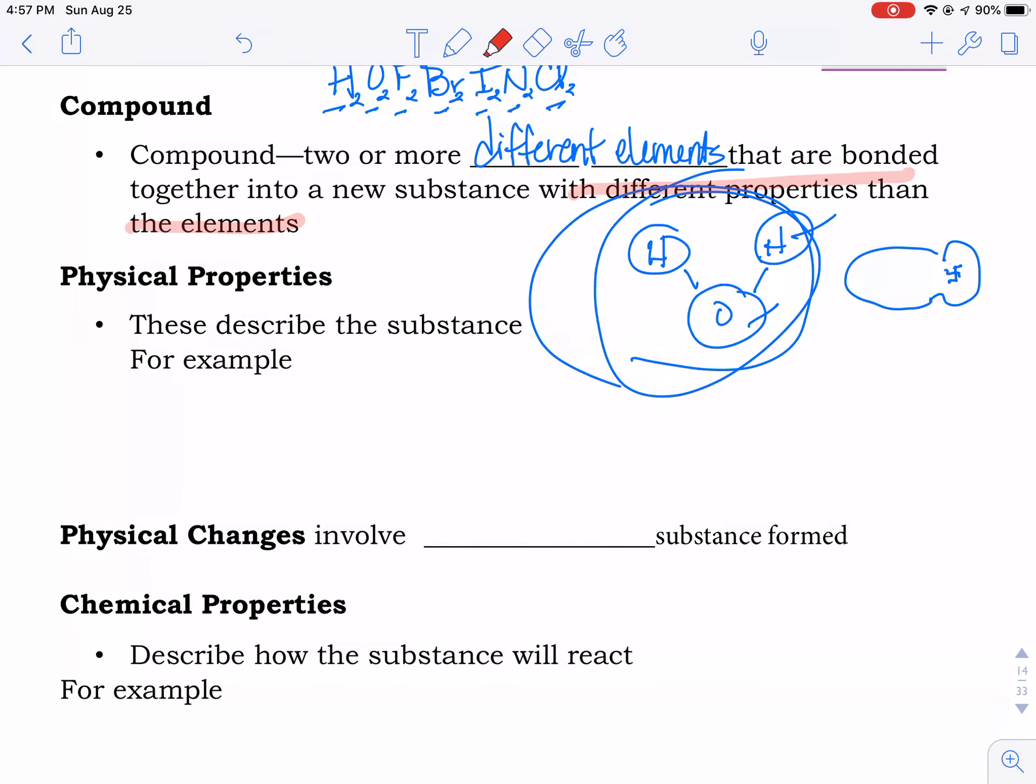Physical properties. Physical properties are things that describe the substance. For instance, color. What phase it's in. Solid, liquid, or gas. And along those lines, things such as boiling point. Things that you can use to identify that are based on what the substance is. Physical changes involve no new substance being formed. So if you have ice, the ice melts, it's still H2O. It's just not in a solid form anymore.